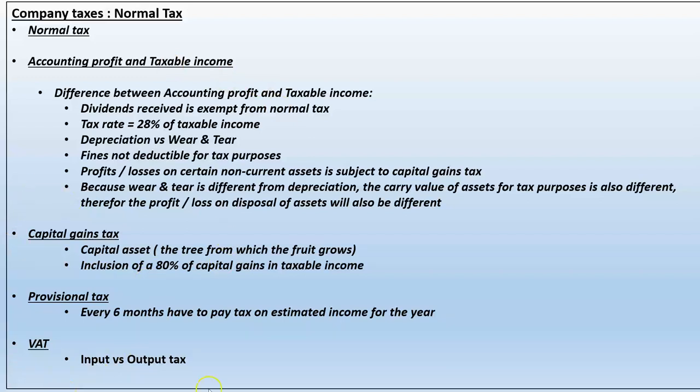Something you need to understand is provisional tax. The receiver says he cannot wait for you to complete your financial year and only then pay tax — that is far too long. Assuming your financial year ends 31 December, after six months — on 30 June — you must make an estimate of what the total taxable income for the year will be, calculate the estimated tax liability, and then pay 50 percent of that estimated liability. That is the first provisional tax payment.